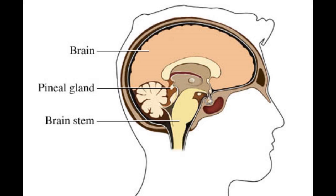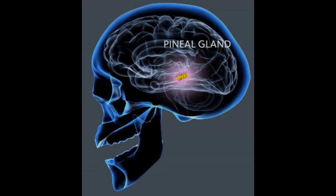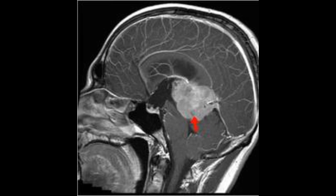The pineal gland produces melatonin to control when we sleep and when we are awake. Pineal region tumors are more common in adults than children and more common in men than women. These tumors cause difficulty in simple tasks such as looking up or focusing on close objects. They may spread to the pituitary gland and can cause delayed puberty in teenagers or other hormonal problems. Types of pineal tumors include astrocytomas, teratomas, meningiomas, pineocytomas, and pineoblastomas.